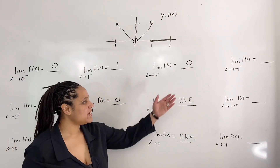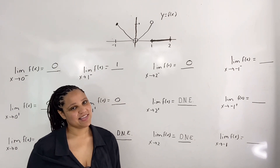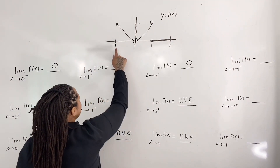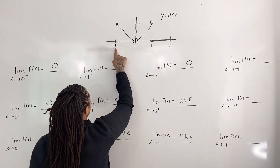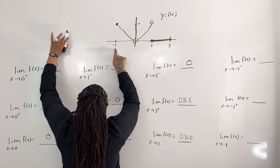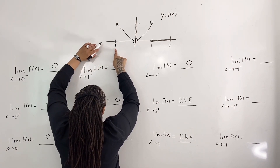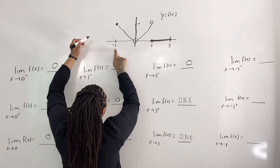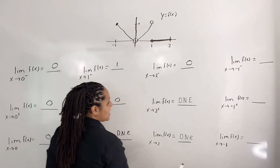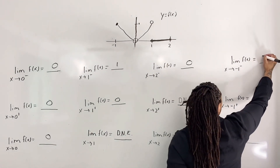Next we evaluate the limit as x approaches negative 1 from the left. I first place one hand by x equals negative 1, but we see that there is not a graph to the left of x equals negative 1. Negative 1 is a left endpoint. So the limit as x approaches negative 1 from the left does not exist.